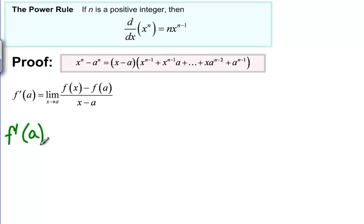And if we apply this to our particular situation, we want to know about X to the N, then we're looking at the limit as X goes to A of X to the N minus A to the N over X minus A.